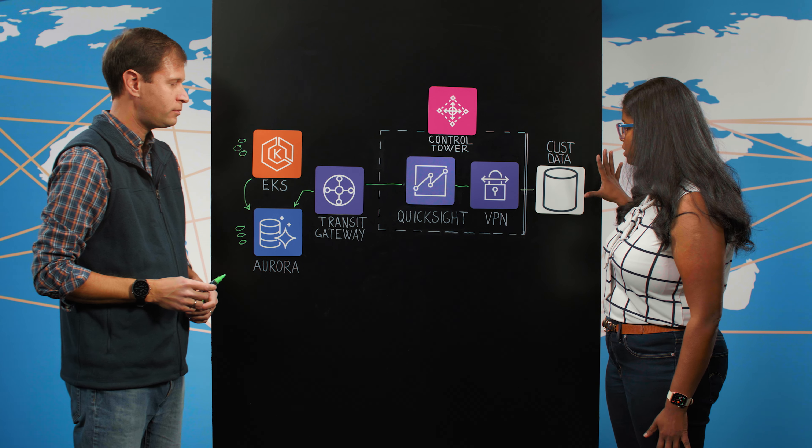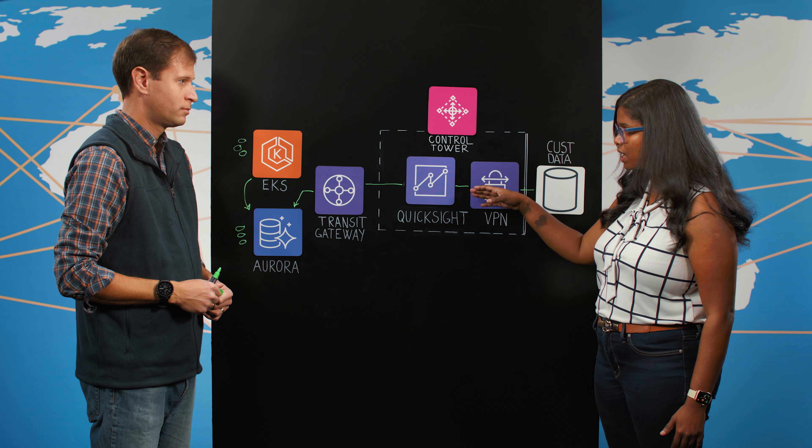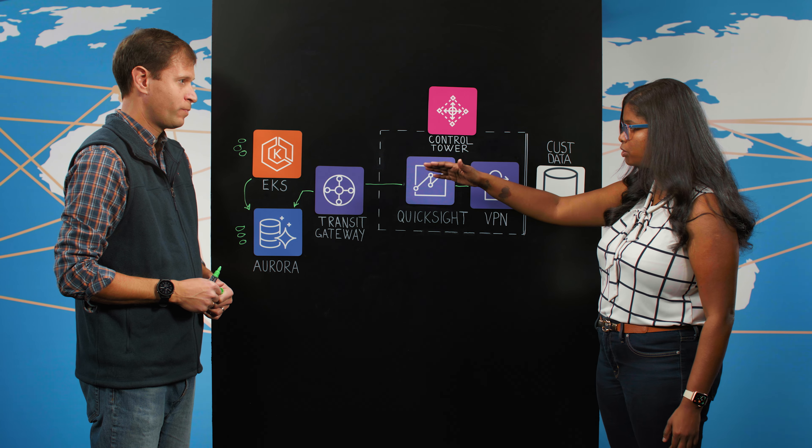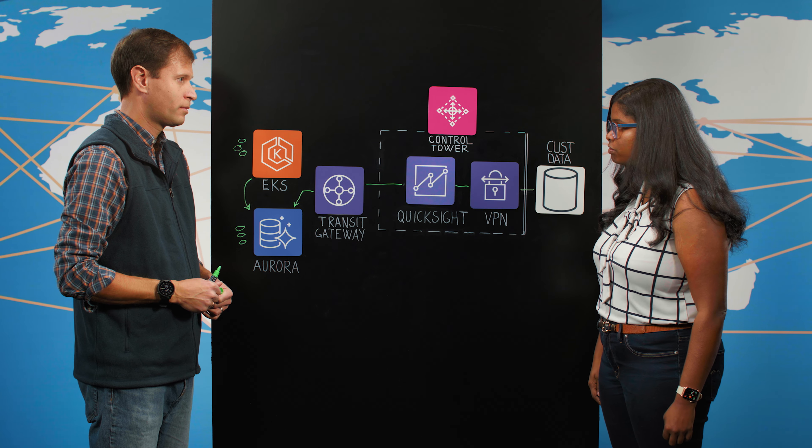Great, so you have data, if customers have on-premises data or other data sources, you ingest it into the same QuickSight dashboard and then they can compare data between what from the multi-tenant application and their on-premises source. Exactly.